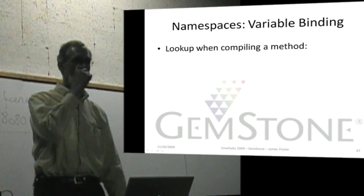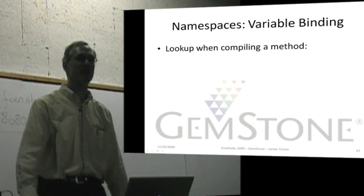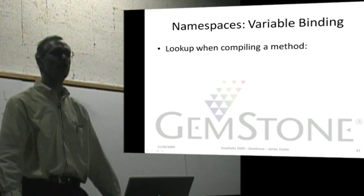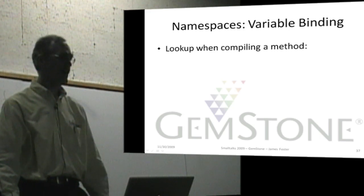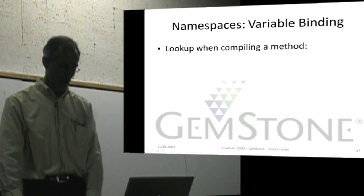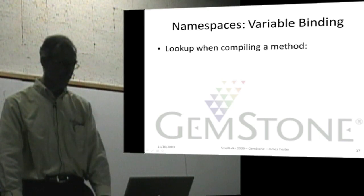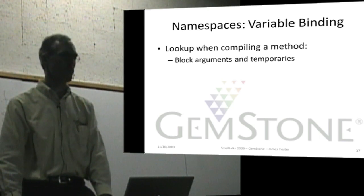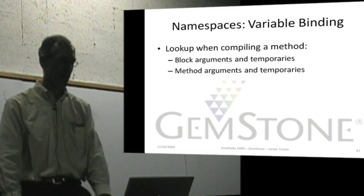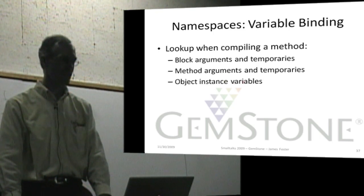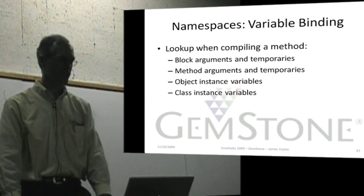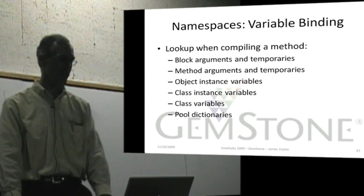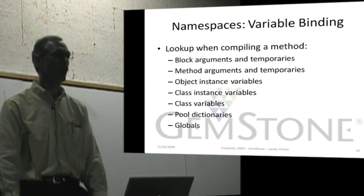One of the interesting discussions in the Smalltalk community is namespaces, and how do you identify names when you're compiling? Well, there's a number of rules for that. In traditional Smalltalk and Gemstone, block arguments and temps, method arguments and temps, object instance variables, class instance variables, class variables, pool dictionaries, and then finally, globals.